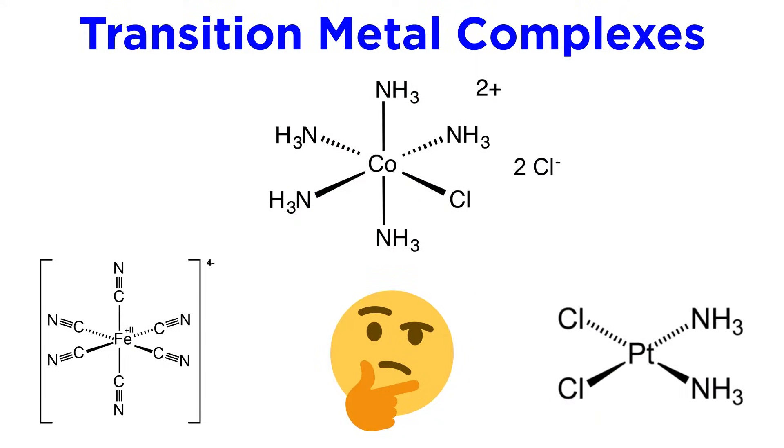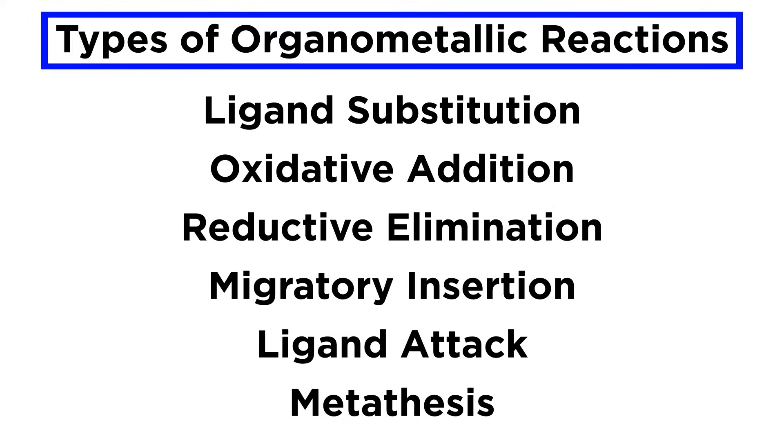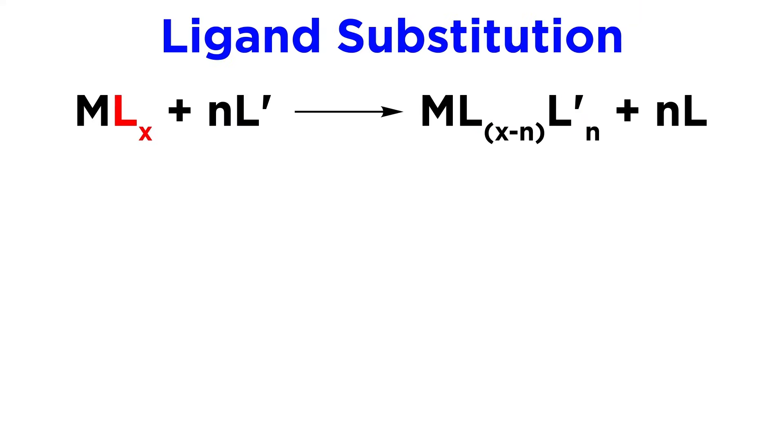Now that we have a general understanding of the structure of transition metal complexes and some other background information, we are ready to start learning about the types of chemical reactions these complexes will undergo. The first type is fairly straightforward conceptually, it is called ligand substitution, and it involves one or more ligands being exchanged for that same number of some other ligand.